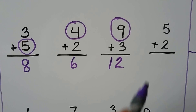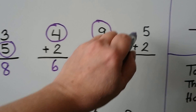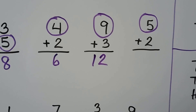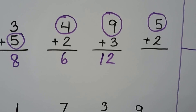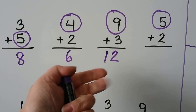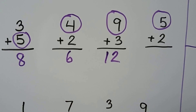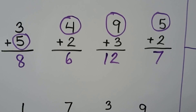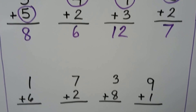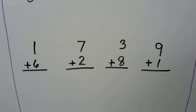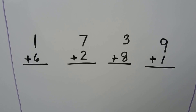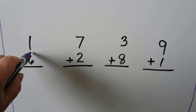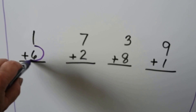5 plus 2 — 5 is the greater addend. We start with the 5 and count on 2: 5, 6, 7. 1 plus 6 — 6 is the greater addend, isn't it?